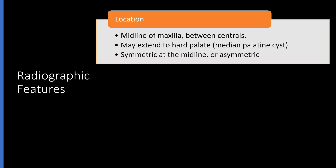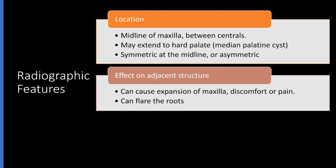These are some helpful radiographic features. Most of the time, the nasopalatine duct cyst is at the midline of the maxilla between the central incisors. It may extend into the hard palate. While most of these cysts are symmetric at the midline, some can be asymmetric either to the right or the left side — and in our case, the cyst was asymmetric. This cyst can cause expansion of the maxilla. The patient may have discomfort or pain, and radiographically we can often see that the roots of the central incisors are separated.